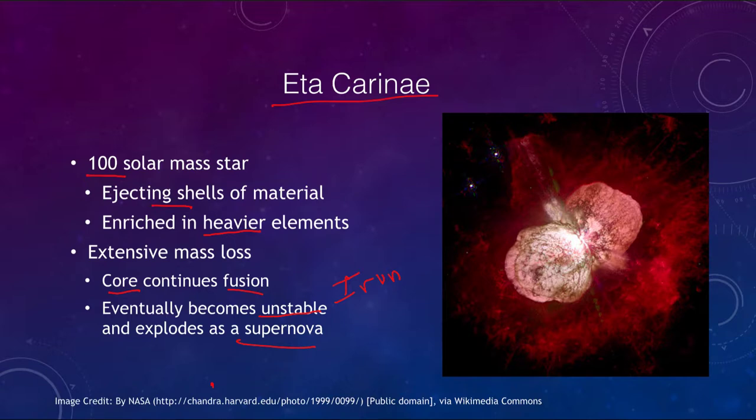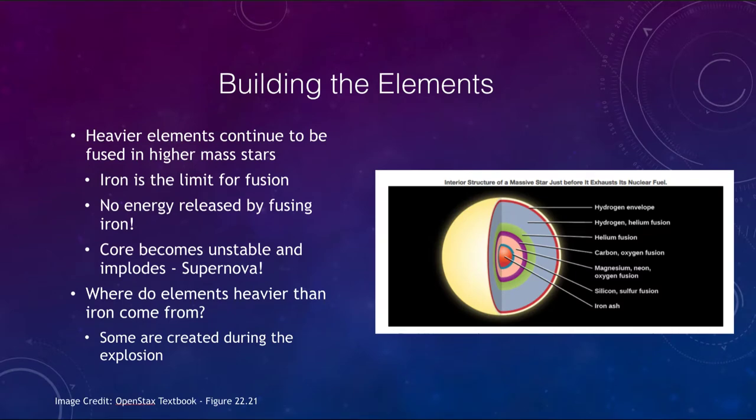Let's look at how we actually build up the elements by this process. We build up to iron in the core and this is where a lot of the heavier elements come from. Iron is that limit. You cannot go any higher than iron when you are fusing materials because no energy will be released. The core eventually becomes unstable, implodes, collapses down, and then rebounds back outward as a supernova explosion.